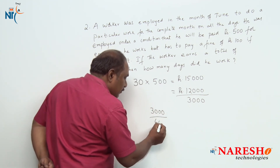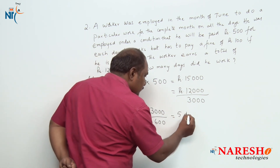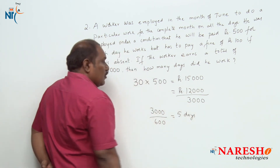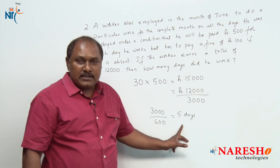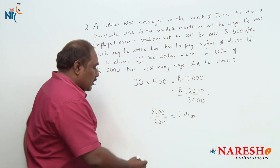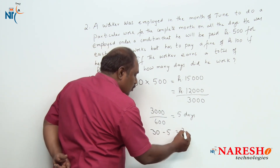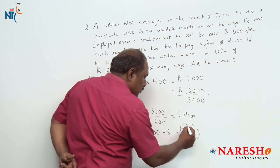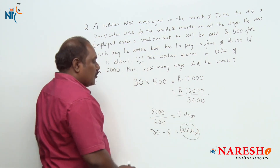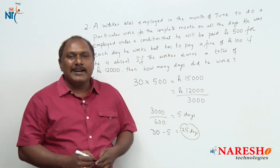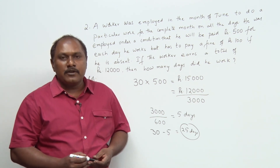So for how many days did he not work? 3,000 divided by 600 is 5 days. The worker was absent for 5 days, so how many days did he work? 30 minus 5 is 25. The worker worked totally for 25 days. Thank you for watching — for more videos, subscribe to Naresh IT.